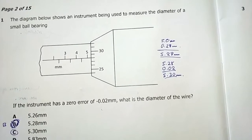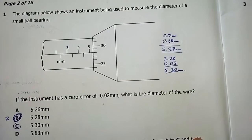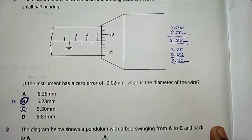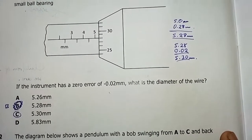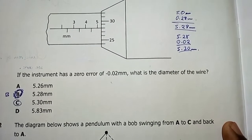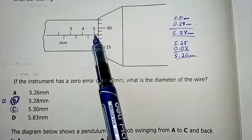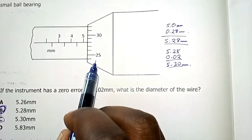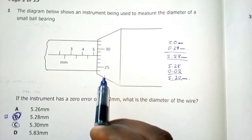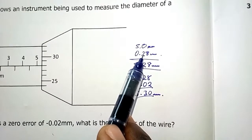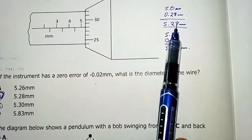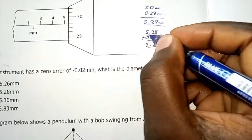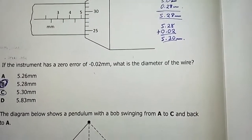Question 1: The diagram shows an instrument used to measure the diameter of a small ball bearing — this is the micrometer screw gauge. If the instrument has a zero error of negative 0.02 mm, you add to your final answer. I read 5.0 mm on the sleeve and 0.28 mm on the thimble, giving 5.28 mm. Adding the correction of +0.02 gives a final answer of 5.30 mm.